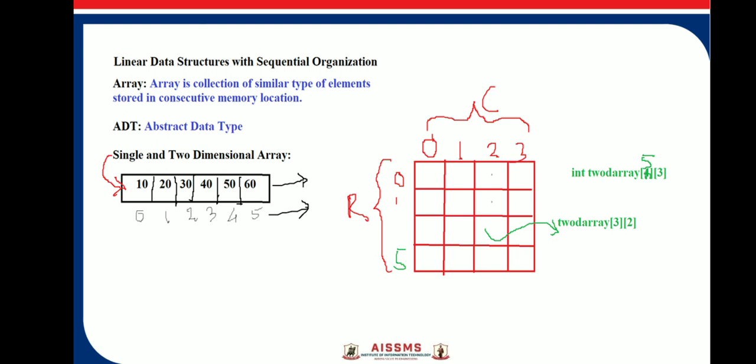The advantages of sequential organization are that elements can be retrieved or stored very efficiently with the help of index and memory location. All elements are stored at continuous memory locations, hence searching of elements from sequential organization is easy.